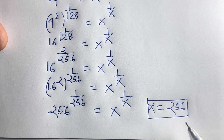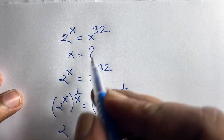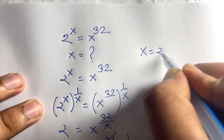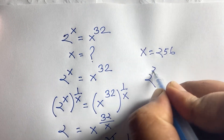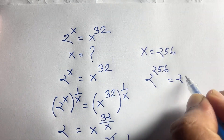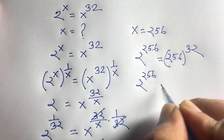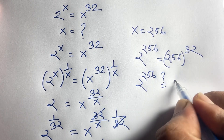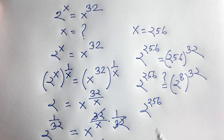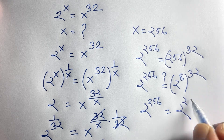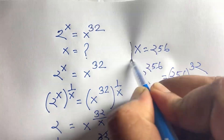Our final answer is x is equal to 256. Let's check: our question is 2 to the power x equal to x to the power 32. Substituting x = 256: 2 to the power 256 is equal to 256 to the power 32. Since 256 is 2 to the power 8, we get 2 to the power 8, whole to the power 32, which is 2 to the power 256. Both sides are equal, confirming x is equal to 256. This is our final answer.